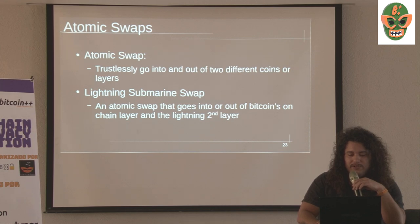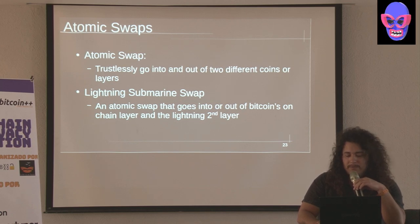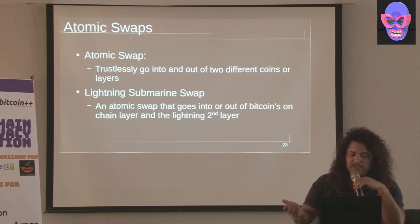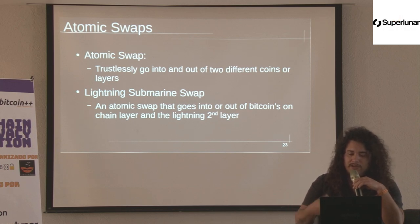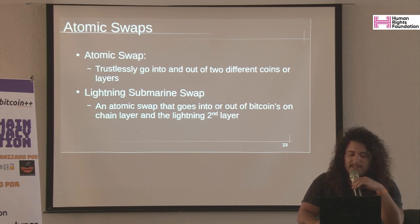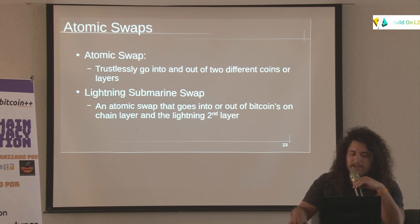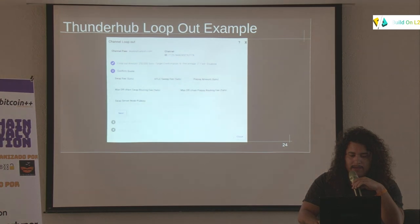Atomic swaps are another approach to on-chain privacy. There are atomic swaps and submarine swaps. Atomic swaps is a general term — it could be over different coins or layers. CoinSwap is essentially a version of atomic swaps. Someone has a coin, possibly on a different chain, and they trade with another person atomically. If something goes wrong, both parties get their original funds back minus on-chain fees. Lightning submarine swaps are a version of atomic swaps specific to going from on-chain to the Lightning second layer.